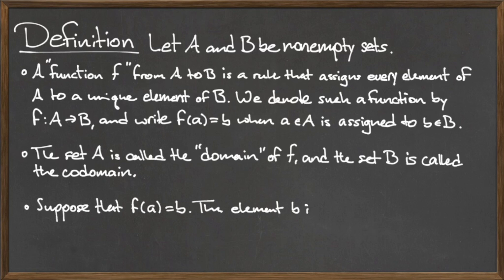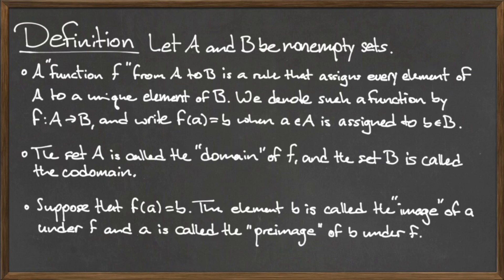When referring to the element assignment f(a) = b, we call the element b in the codomain the image of a under f. And we call the element a in the domain the pre-image of b under f.